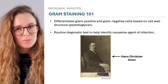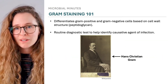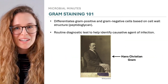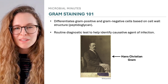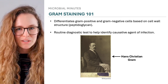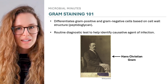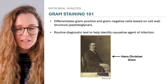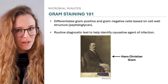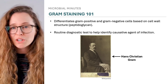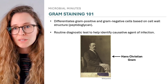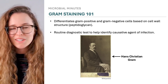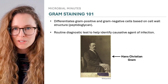Invented in 1882 by Danish bacteriologist Hans Christian Gram, gram staining remains a key method of bacterial identification. It is routinely used in clinical settings to help identify pathogenic bacteria causing an infection, and is also used in other fields like environmental monitoring.